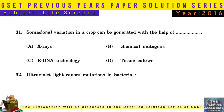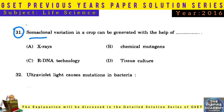Question No. 31: Somaclonal variation in a crop can be generated with the help of tissue culture.